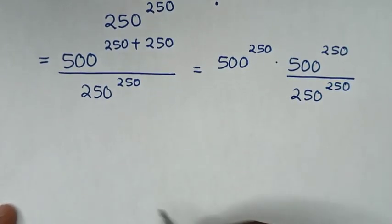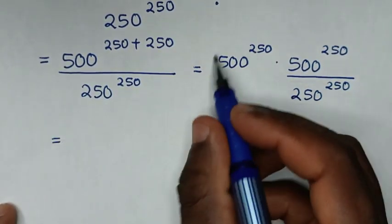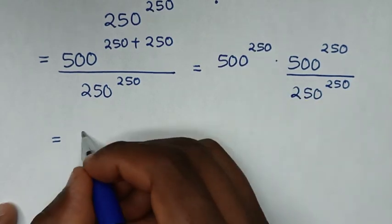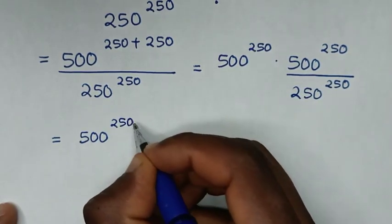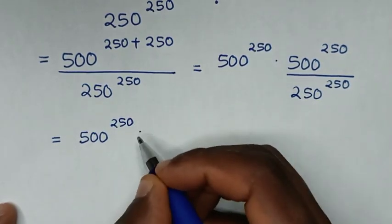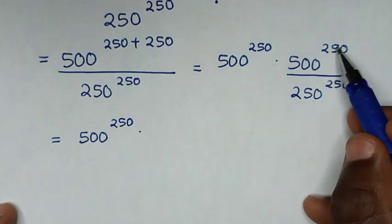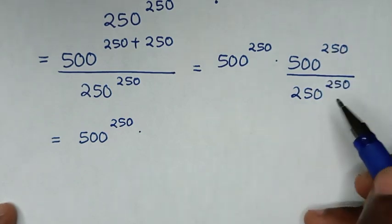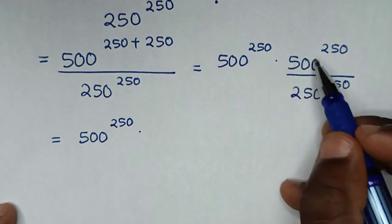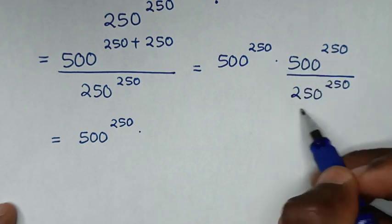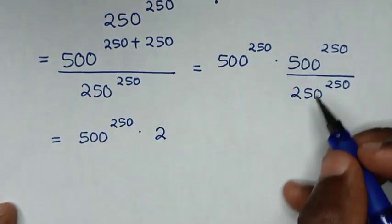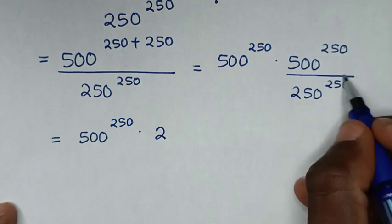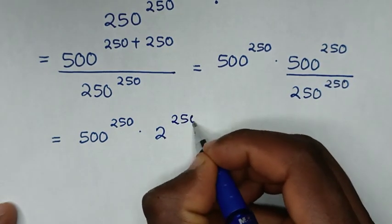The next step, it will be equal to 500 power of 250, then times — this is division of exponents with the same power. So it will be 500 divided by 250, which is 2, with the same power of 250.